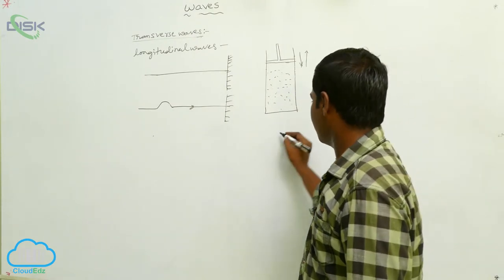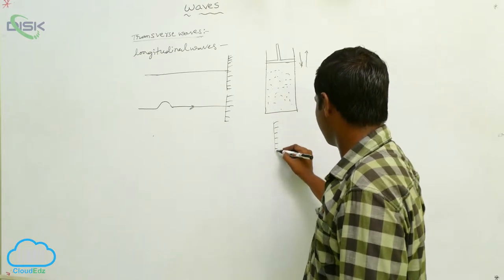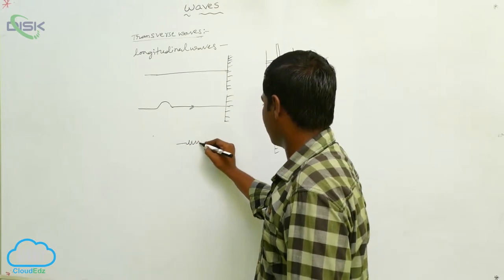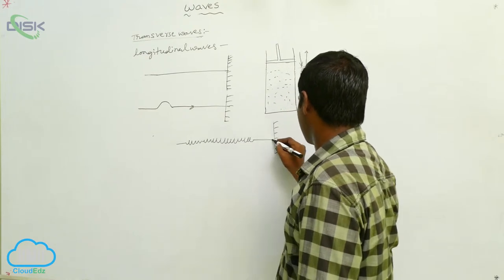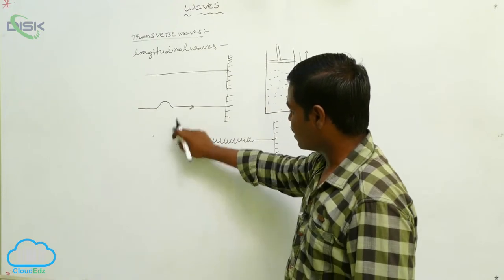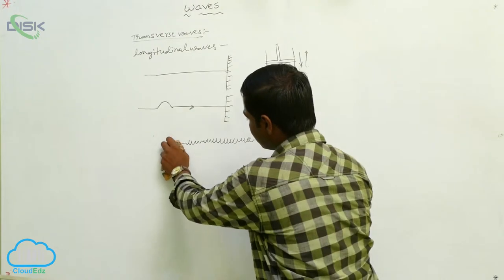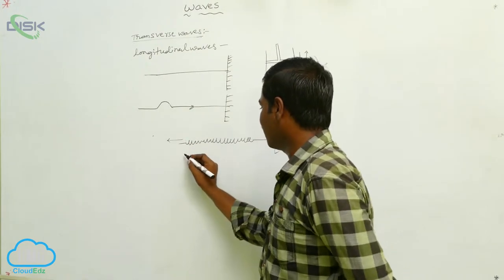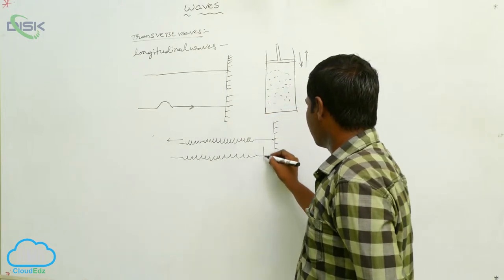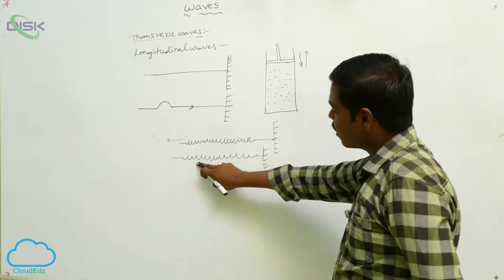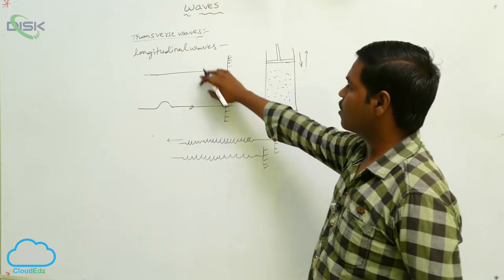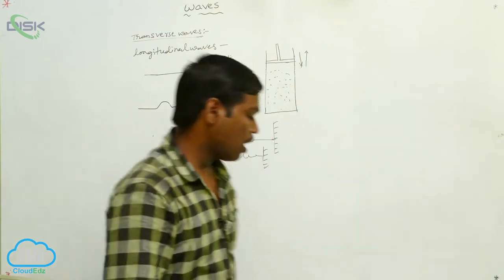If we take a spring attached to the support, and if we drag this spring along this direction — if we just pull this spring along this direction — then in that spring, longitudinal waves are produced. These longitudinal waves travel along the direction of the wave propagation. This is the explanation for transverse waves and longitudinal waves.